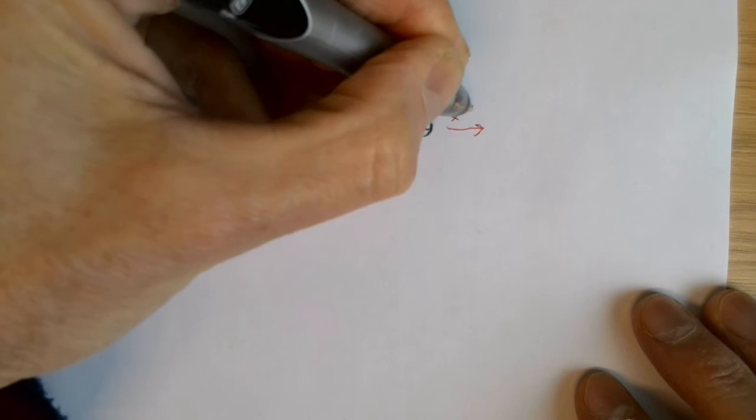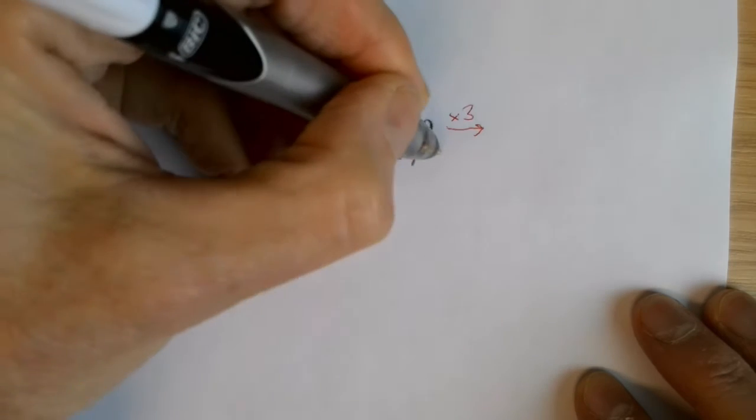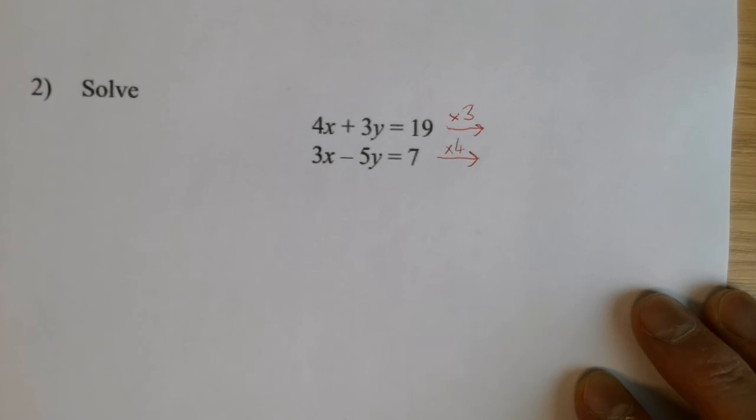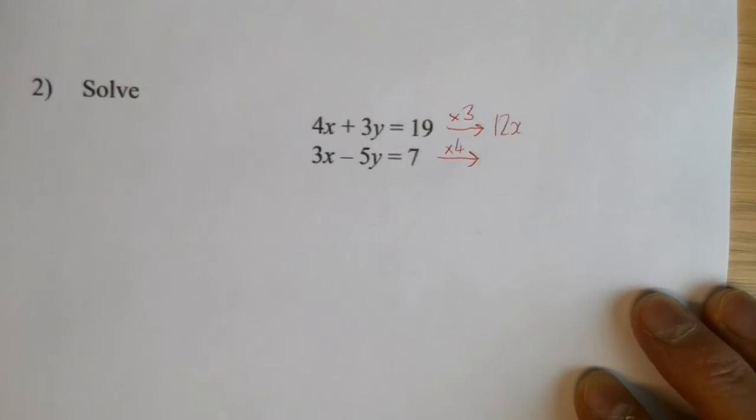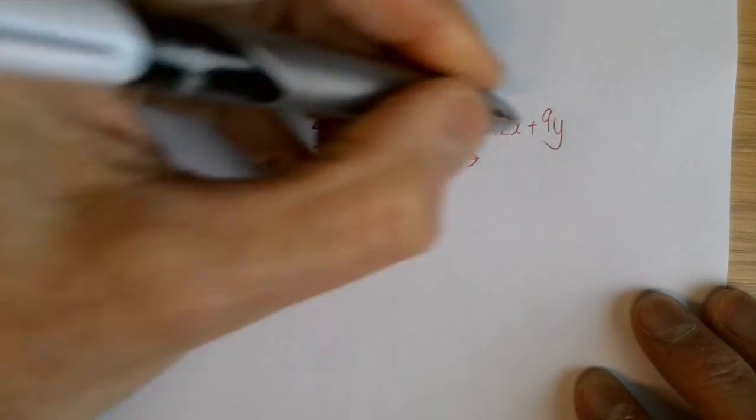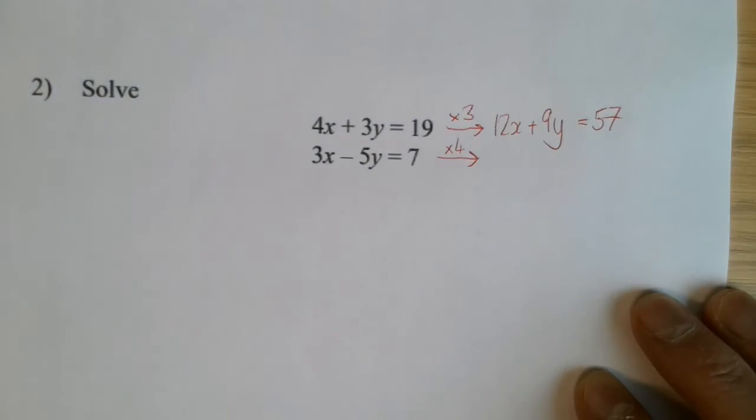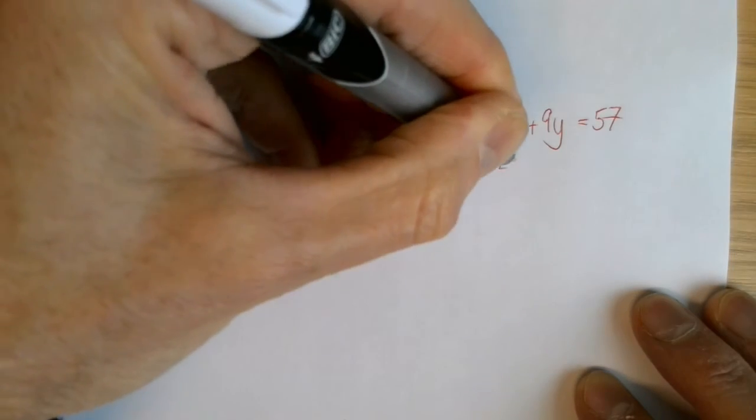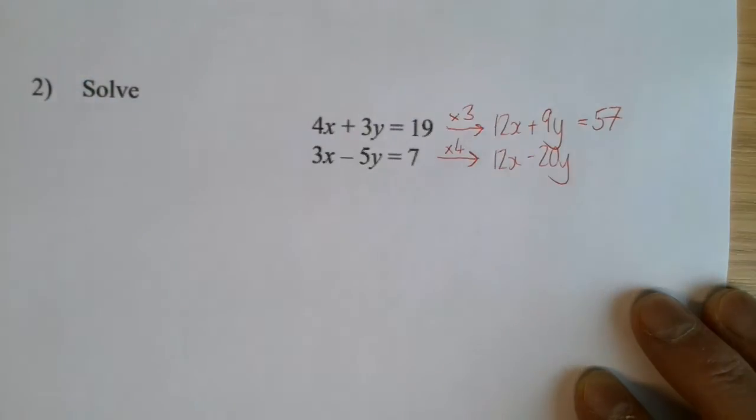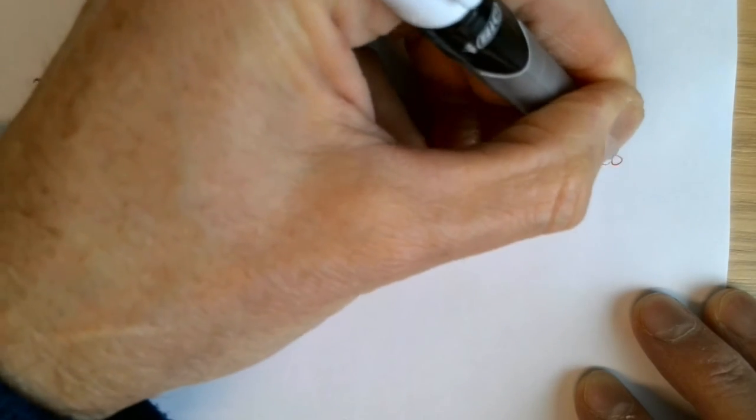But I'm going to multiply the first equation by 3 and the second equation by 4. And everything, therefore, will have 12x's. So I've got 12x plus 9y. Remember, I'm multiplying everything by 3 equals 57. And multiplying by 4, 12x minus 20y is equal to 28.